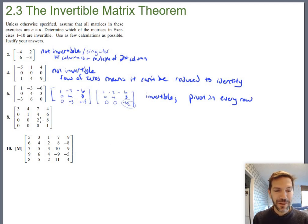Eight, even bigger, four-by-four, but thankfully enough, it is already in row echelon form. I can already see there's a pivot in every row. So I know this is invertible. Same reason, pivot in every row.